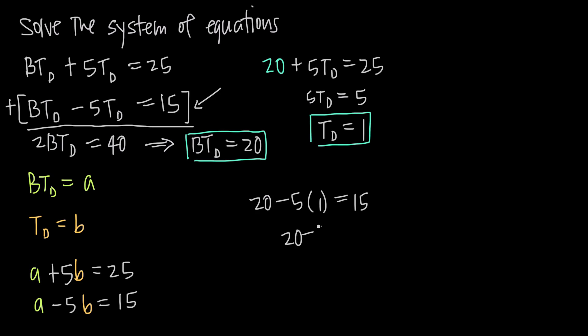Simplifying, we get 20 minus 5 equals 15, or 15 equals 15. And because this checks out, we know that these two values satisfy the second equation as well. So the values BT sub D equals 20 and T sub D equals 1 satisfy this system of linear equations.